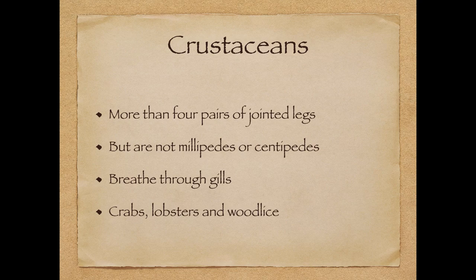Next are crustaceans — these include crabs, lobsters, and woodlice. Most crustaceans live in water, although some live on land. They have more than four pairs of jointed legs, but they are not millipedes or centipedes. They breathe through gills and have compound eyes, the same as insects. They live in very wet places and most are aquatic, which is why they have gills.